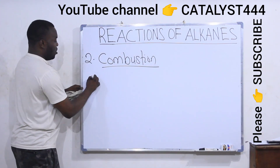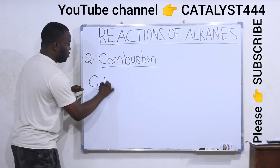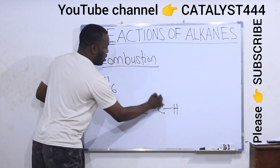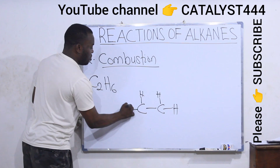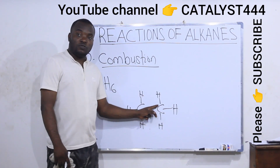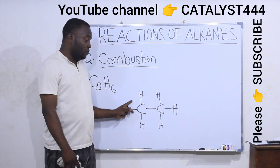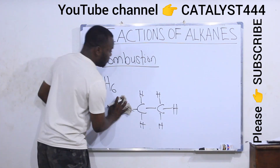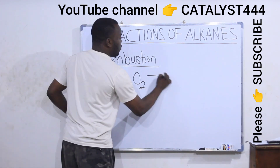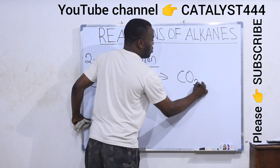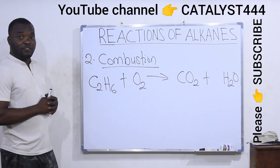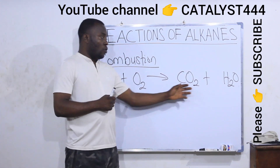Let's take another alkane — ethane. Ethane is C2H6. If I have two carbons I'm going to have six hydrogens for an alkane. If ethane reacts with oxygen, I'm going to have CO2 plus water. This is the reaction between oxygen and ethane to produce CO2 and water.